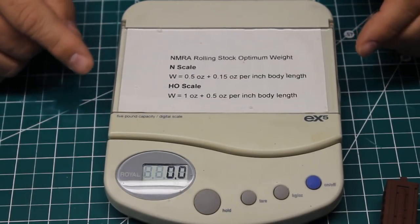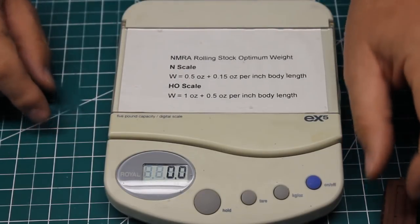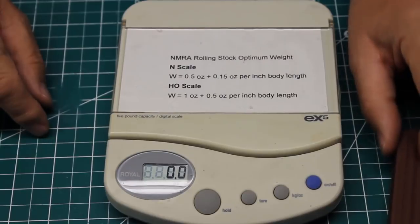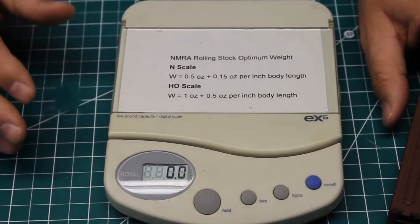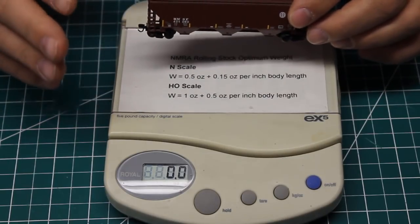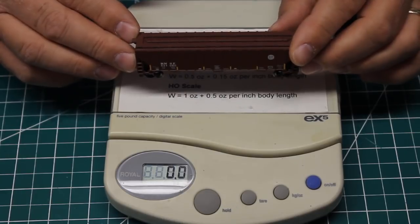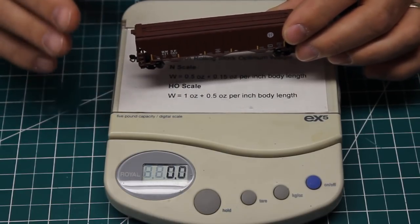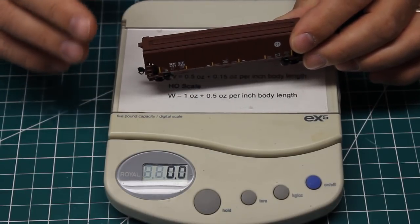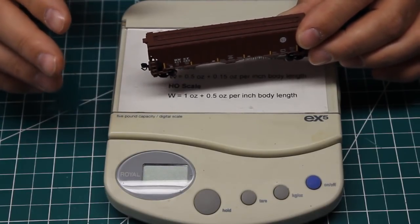NMRA standards dictate how much a car should weigh and again you can kind of see that I have it typed right in a piece of paper on the top of my scale I'll talk more about that in another video but it's a good idea to weigh each car just to see if it is within the parameters that it should be. Cars will roll better and your trains will run better if they are the proper weight. If they're too light they will string line easily around curves. If they're much too heavy then they can add added drag on your trains.